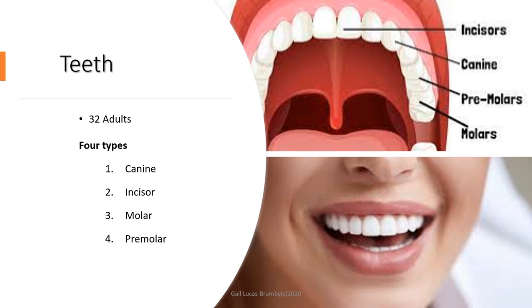Adults have 32 teeth in our mouths, four types: canines, incisors, molars and premolars. The canines are at the front, the incisors tend to be the sharper ones, the molars are the large ones at the back, and the premolars are the ones at the very back. So 32 teeth for chewing, grinding, biting and chopping up food.